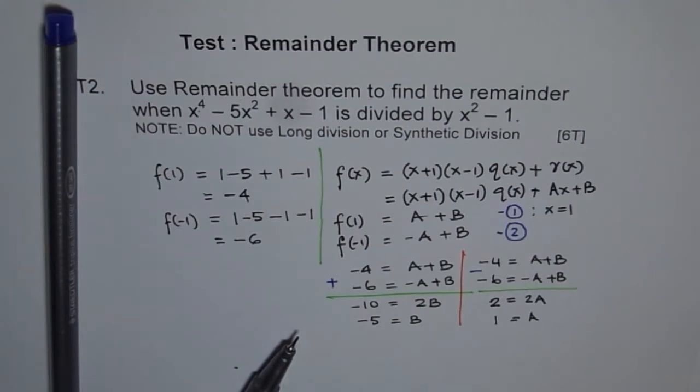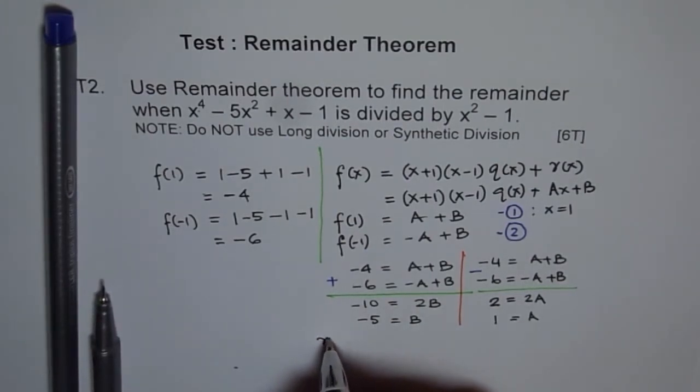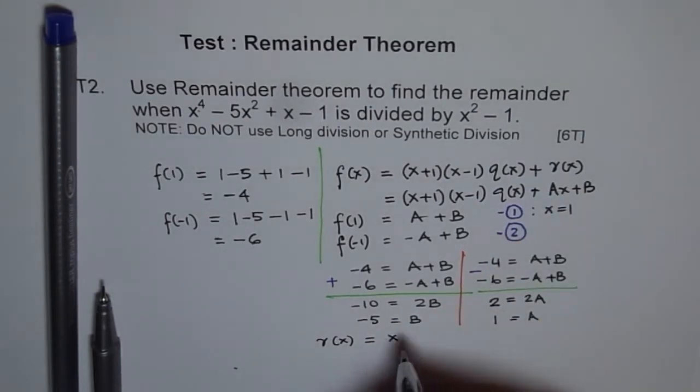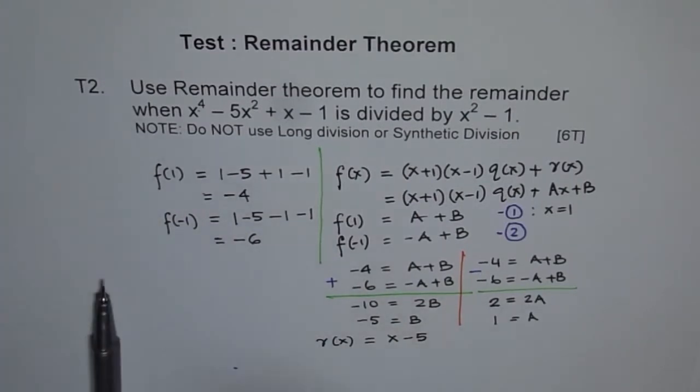So I get my a and b. And therefore, because I know my a and b now, I say remainder r of x equals ax which is 1, so just x. And b is minus 5, x minus 5. So that's my remainder. Do you see that?